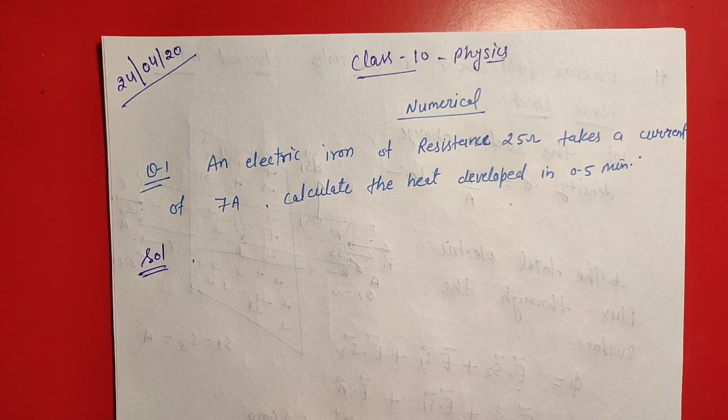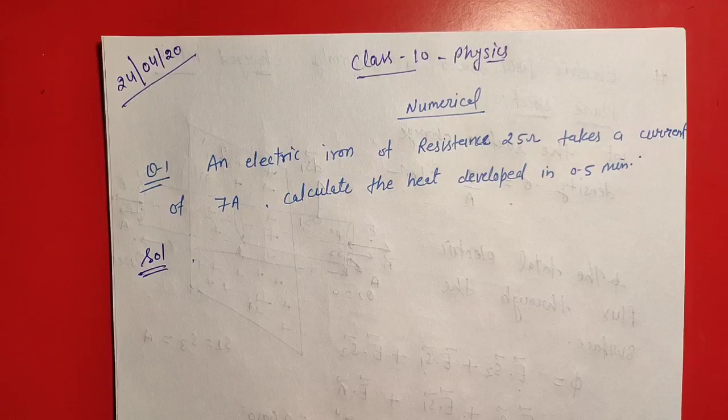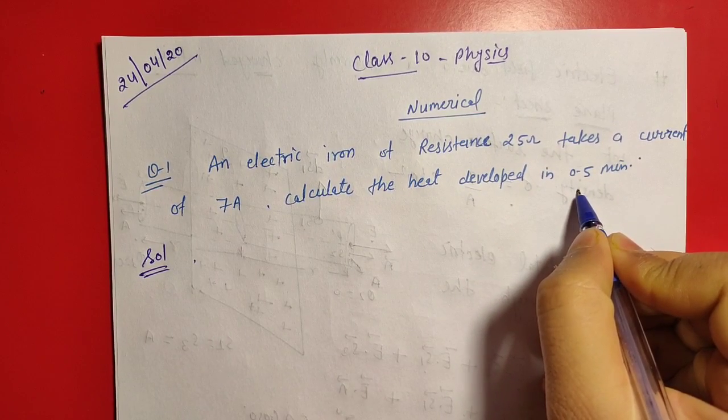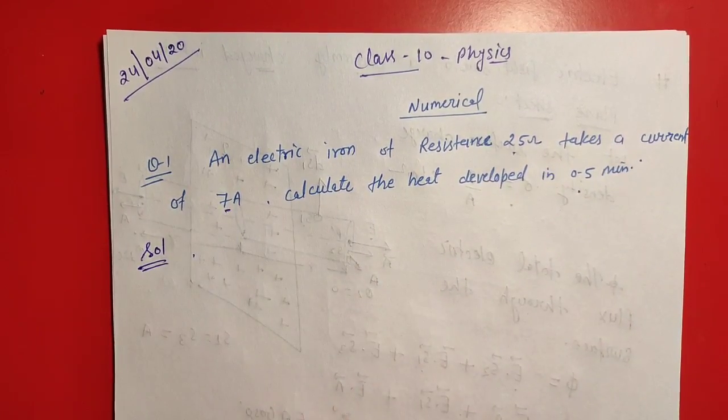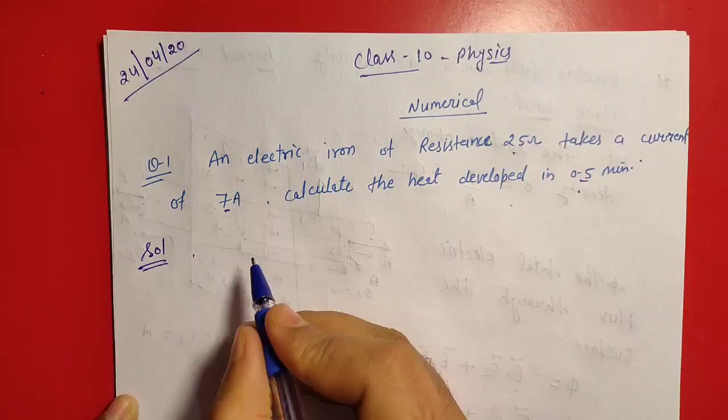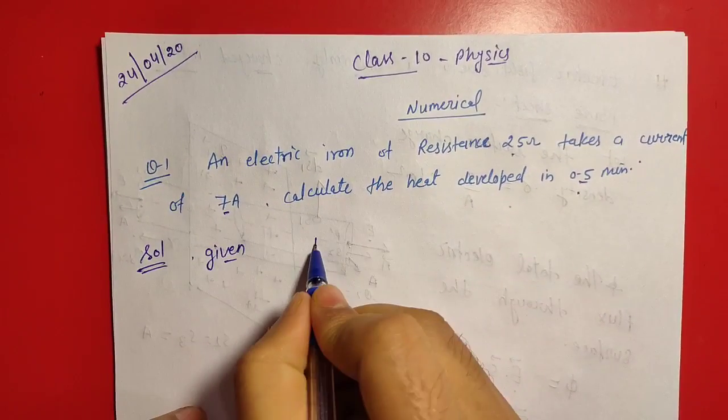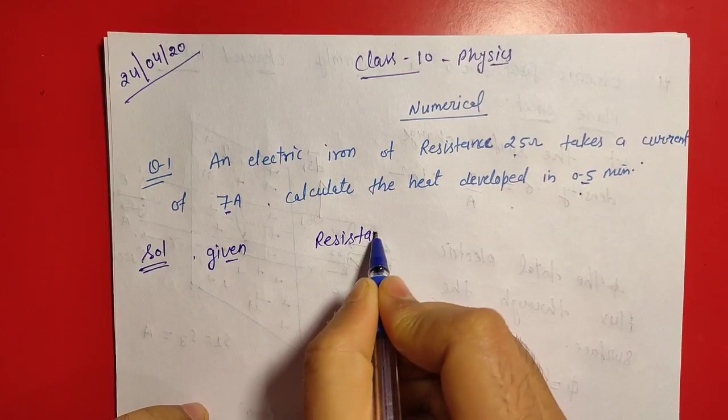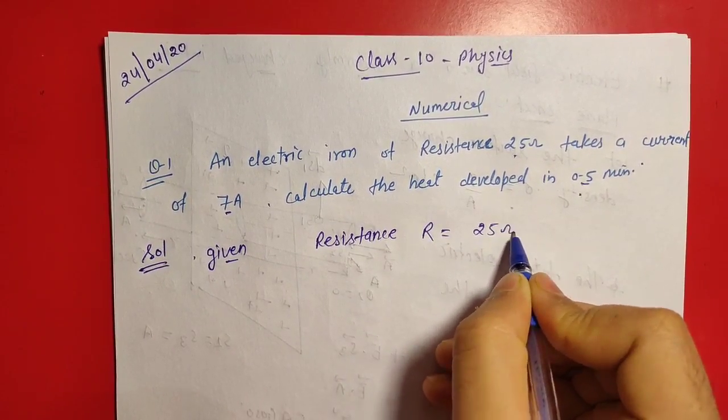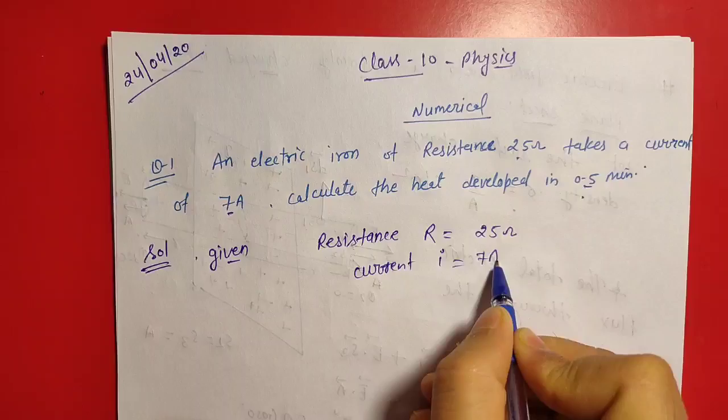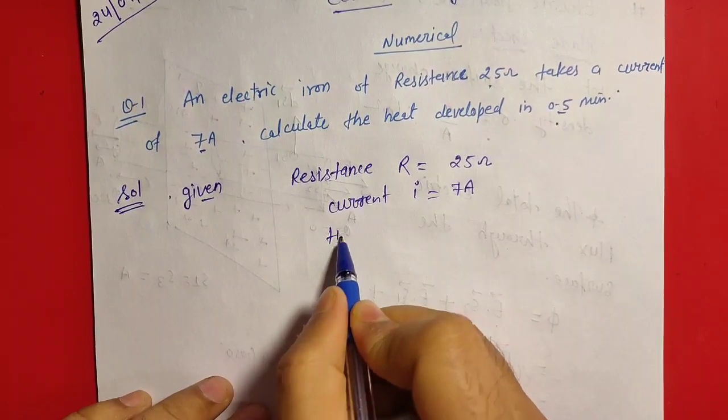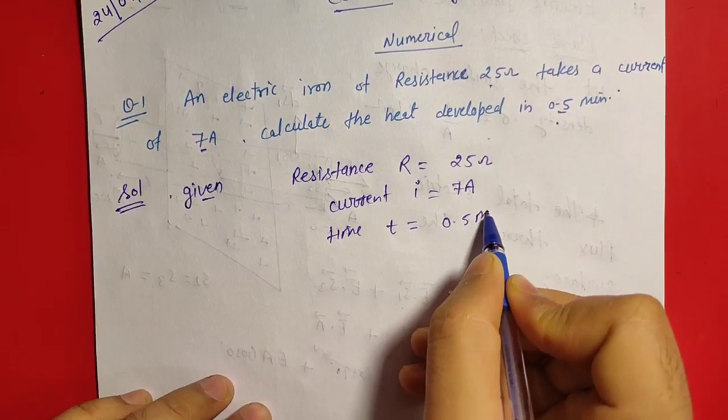The first question of this lecture is: An electric iron of resistance 25 ohm takes a current of 7 ampere, calculate the heat developed in 0.5 minute. The electric iron has a resistance 25 ohm and 7 ampere current pass. How much heat develops? Given that resistance R is equal to 25 ohm, current I is equal to 7 ampere and time is given T is equal to 0.5 minute.